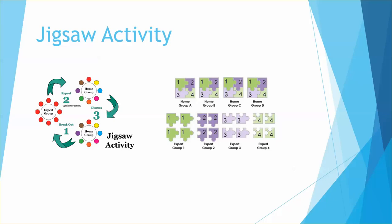He numbers each person in the letter group one through six. Then all the ones meet at a table and read and discuss an article or topic, while the other numbers meet together doing the same activity with a different piece of the content.